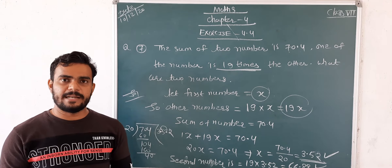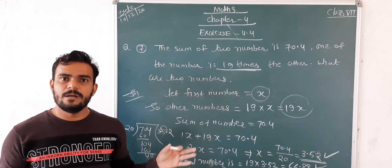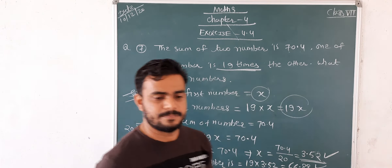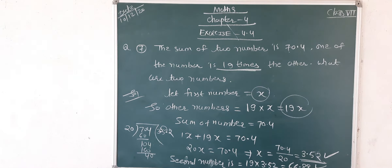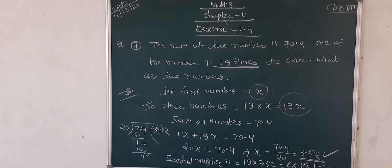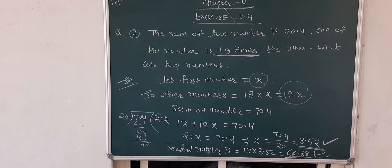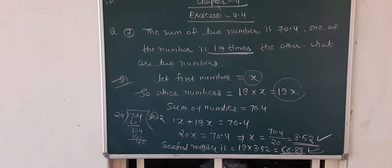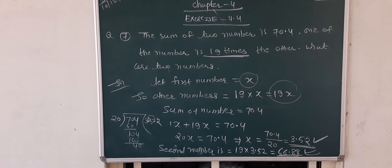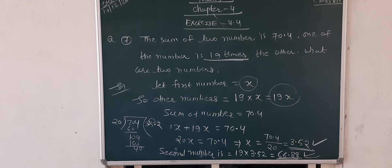Take the screenshot and write in your notebook. If you face any problem understanding, then you can ask. So the second number is 66.88. So 19 multiplied by 3.52 equals 66.88.